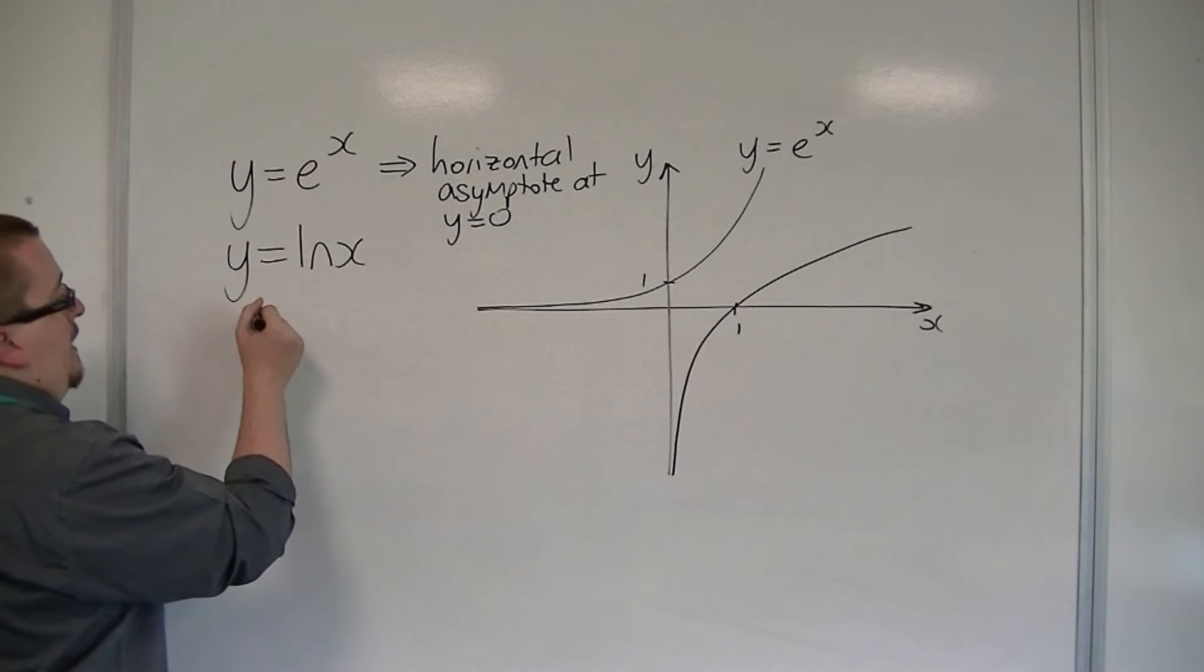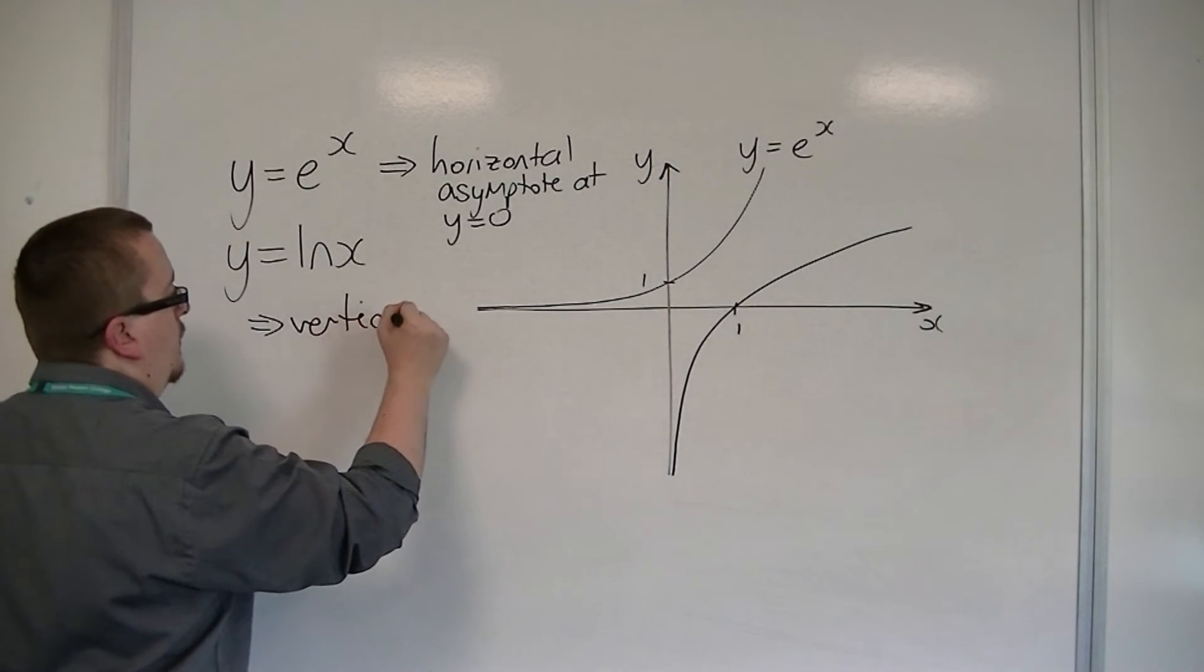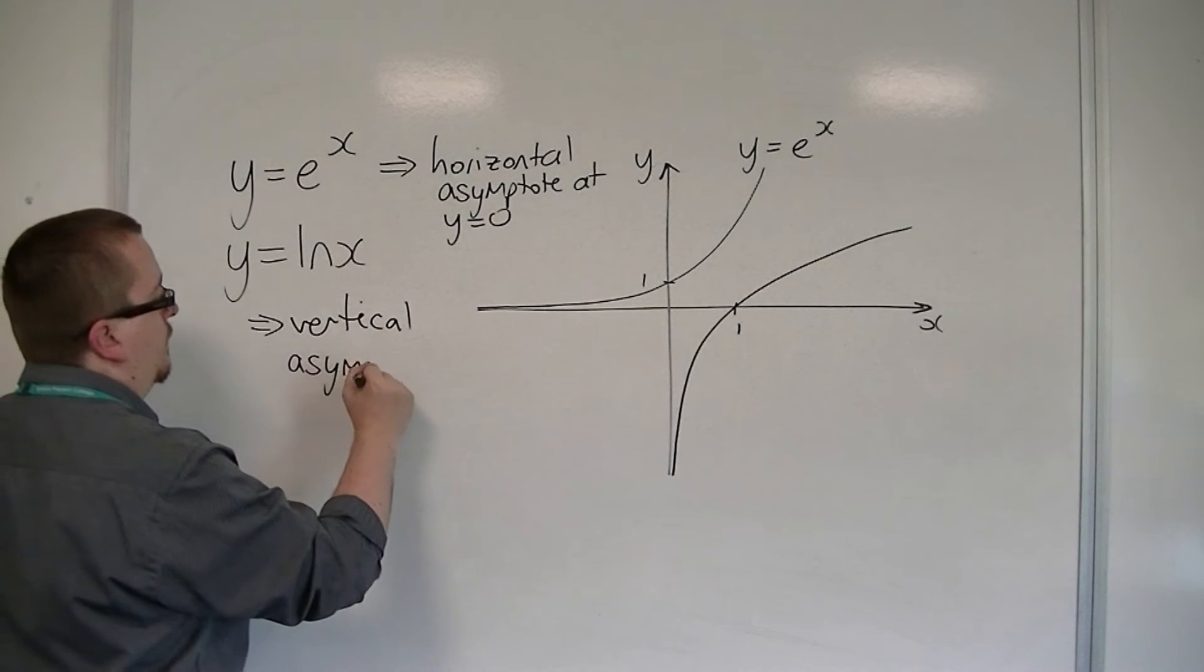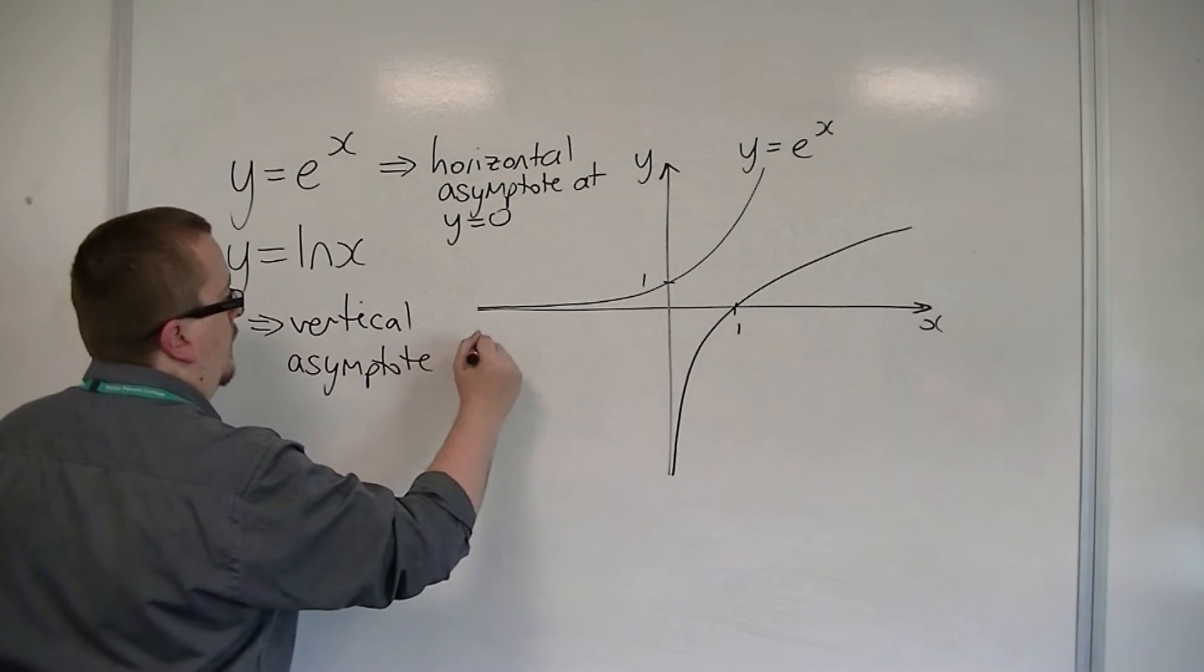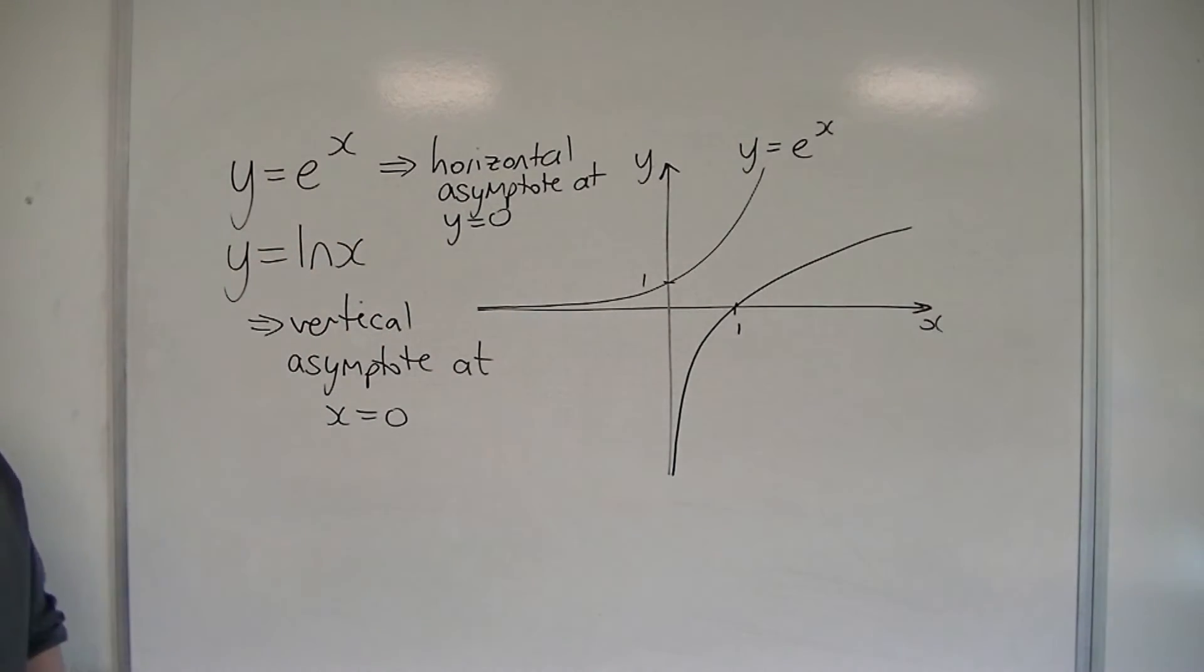And this has a vertical asymptote at x equals 0. So the y-axis is a vertical asymptote for it.